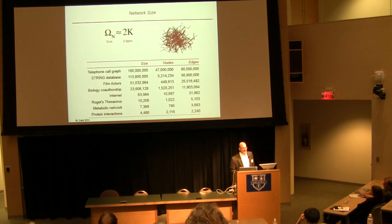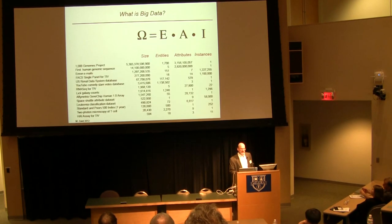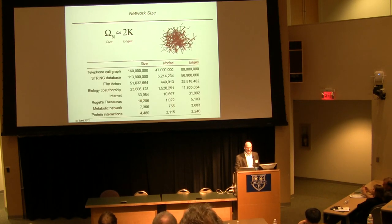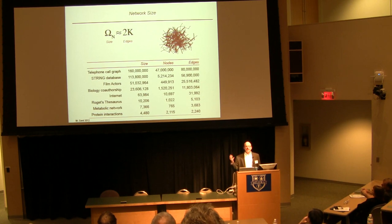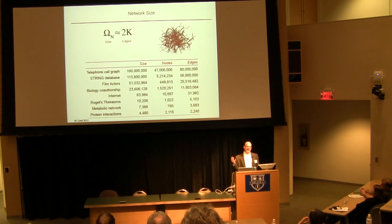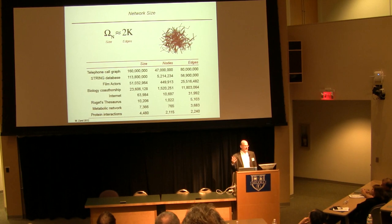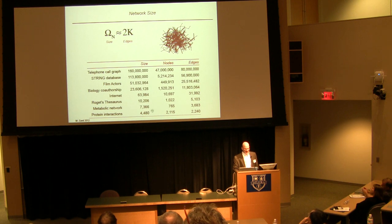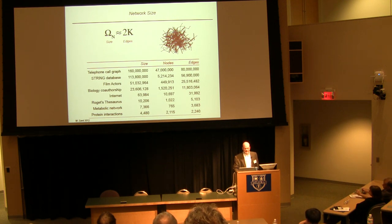What about networks? Data set size scales multiplicatively with entities, attributes, and instances. To define a network you need two nodes connected by an edge; the formula is approximately twice the number of edges, with a correction factor for nodes with duplicate edges. Network data sets are much smaller than the entity data sets we study, and I'm going to talk about both types.